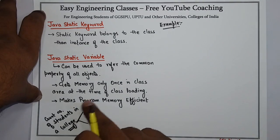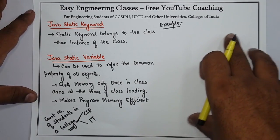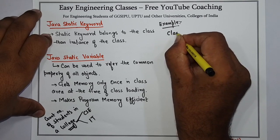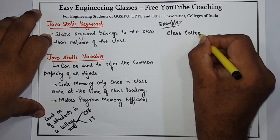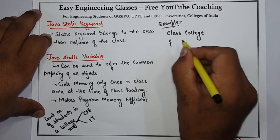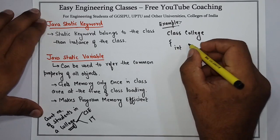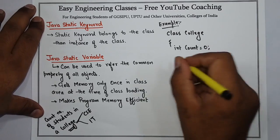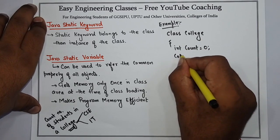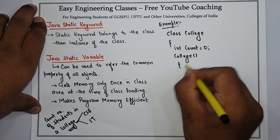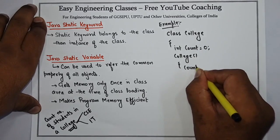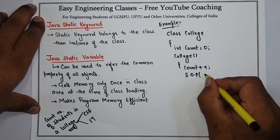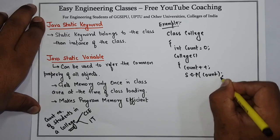Now let's see if I don't have the static variable — what is the problem with that? So let's create a class called College. In this class, I have a counter which will count the total number of students: int count equals to zero. Then create a constructor of the class and increment the count value — count plus plus. And print the value of count in System.out.println.